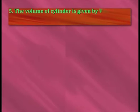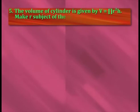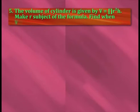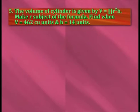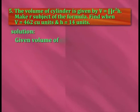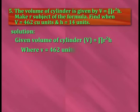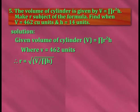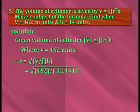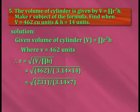The volume of a cylinder is given by v is equal to π·r²·h. Make r the subject of the formula and find r when v is equal to 462 cubic units and h is equal to 14 units. Solution: given v is equal to π·r²·h, where v is equal to 462 units, therefore r is equal to square root of v by π·h, which is equal to square root of 462 by 3.14 into 14, which is equal to root of 231 by 3.14 into 7.